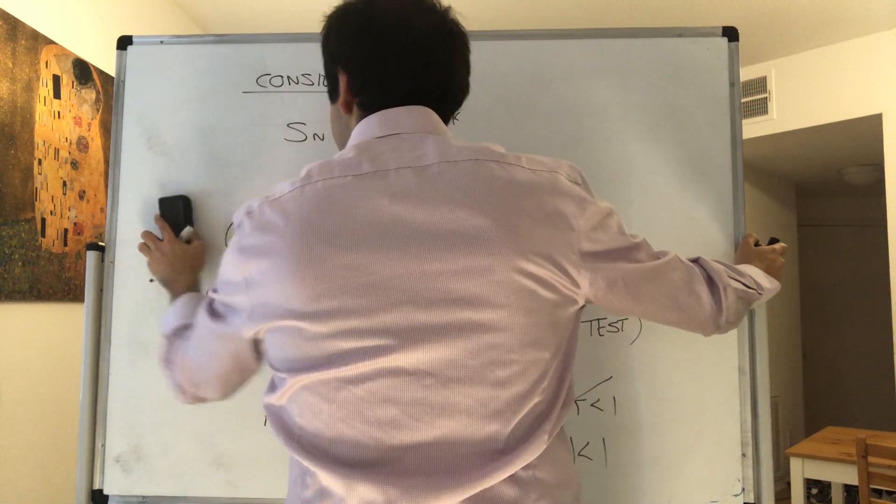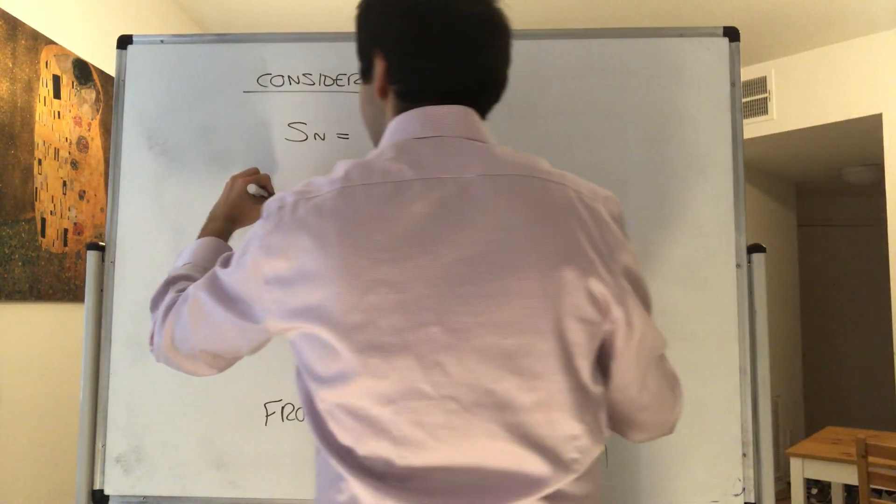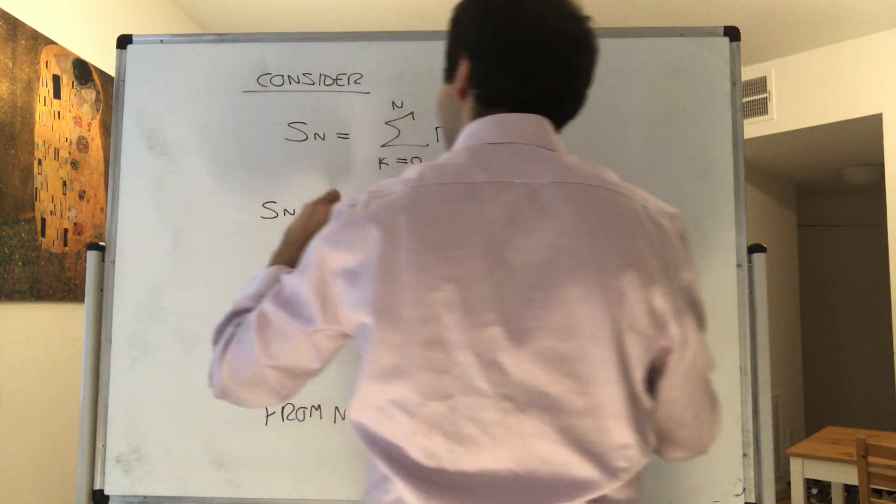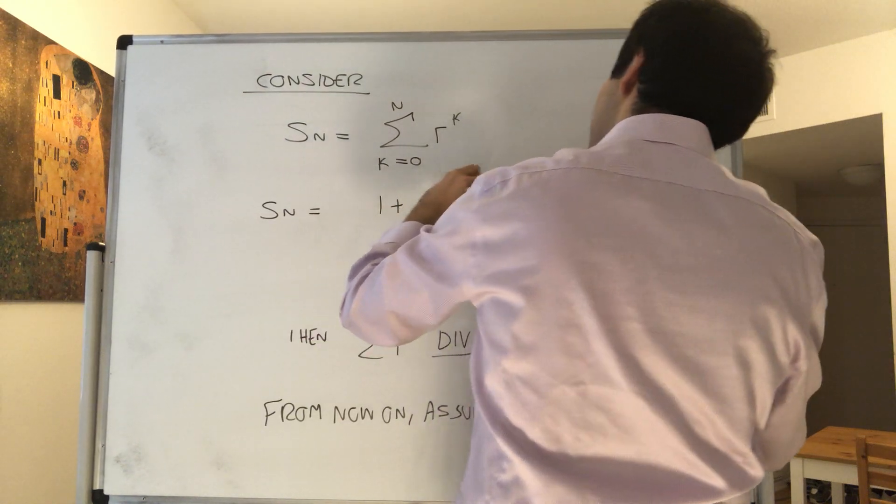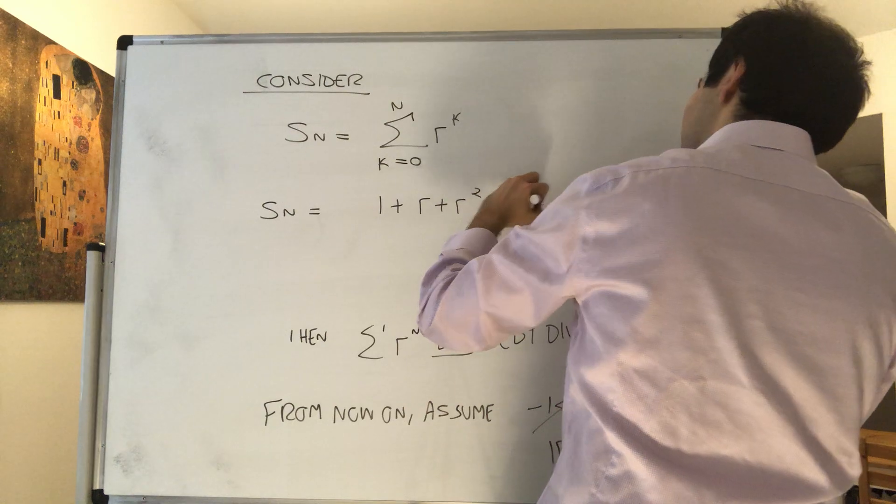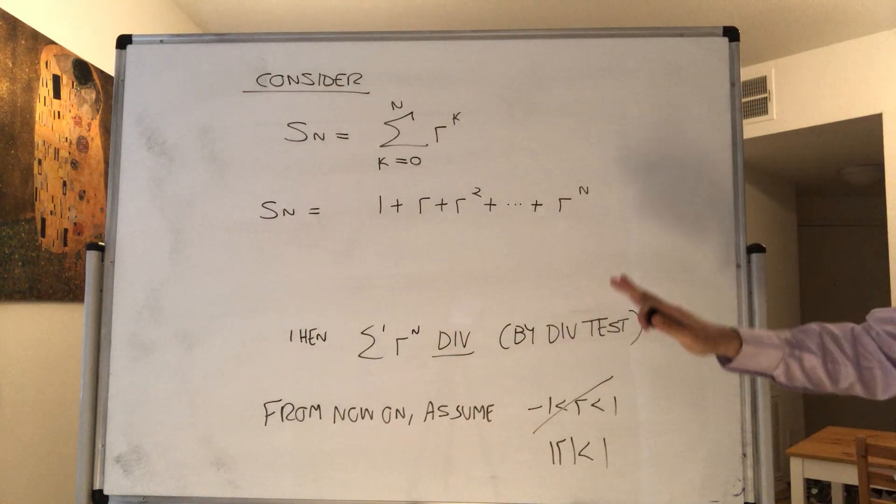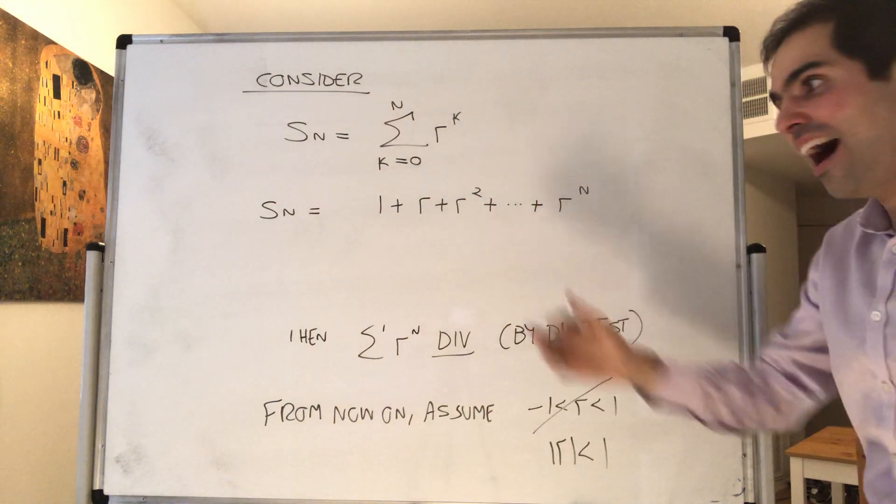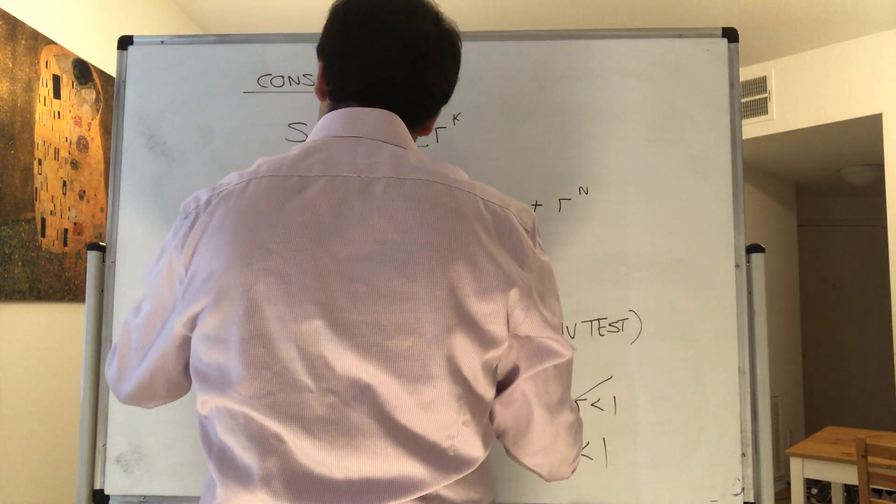In other words, S_n, and you'll see this is quite nice, S_n is 1 plus r plus r squared plus dot dot dot plus r to the n. And here's the trick: consider S_n times r.